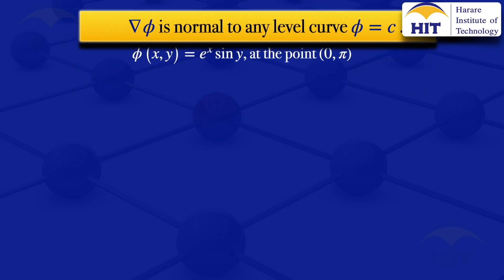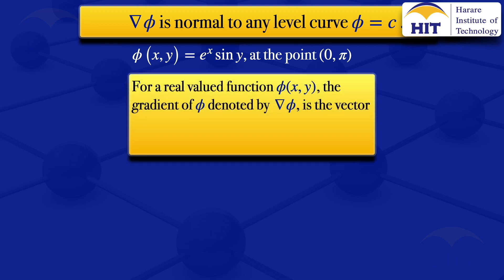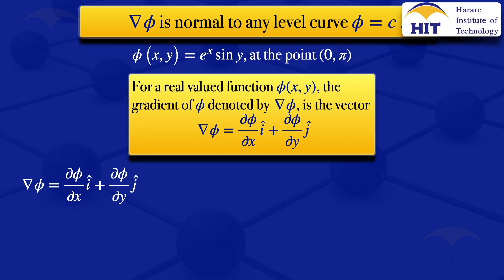We now need to evaluate the gradient of that scalar field. By definition, if we have a scalar field φ(x, y), the gradient — denoted grad φ — is the partial derivative of φ with respect to x times i, plus the partial derivative of φ with respect to y times j.